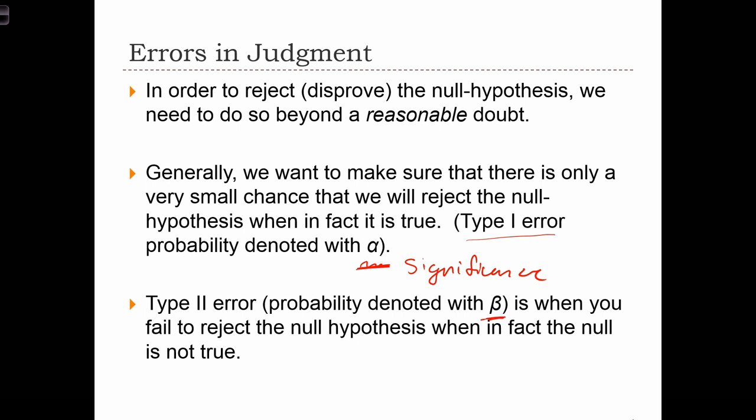In the court case analogy, this is like saying a type 2 error would occur if a guilty person is not convicted by the court. In reality, we would like to be able to convict a guilty person, but there's always some chance that we don't find enough evidence to convict that person.